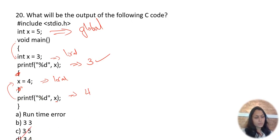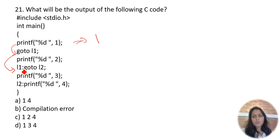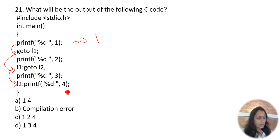What will be the output of this program? In main, 1 is printed first. Then 'goto l1' is encountered, which jumps to label l1. From l1, 'goto l2' jumps to label l2. So instead of printing the intermediate printf, the controller jumps to l2 where 4 is printed. Output is 1 then 4.